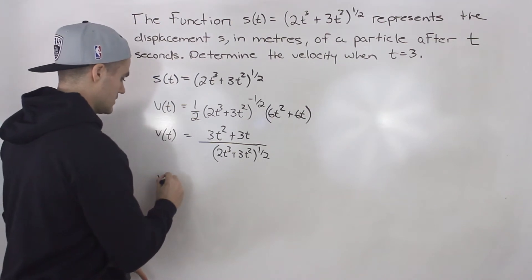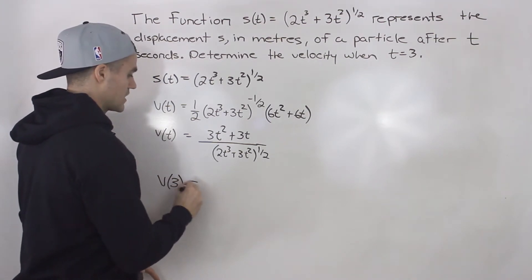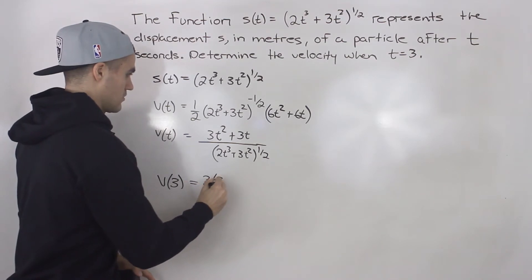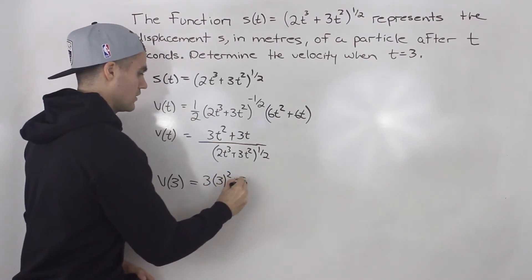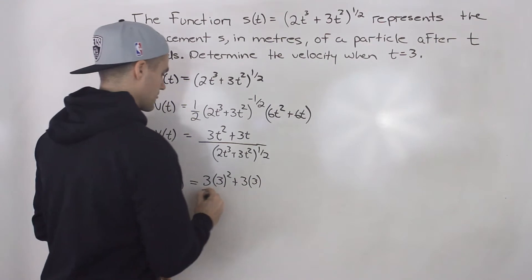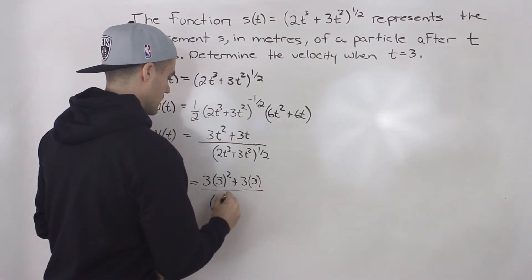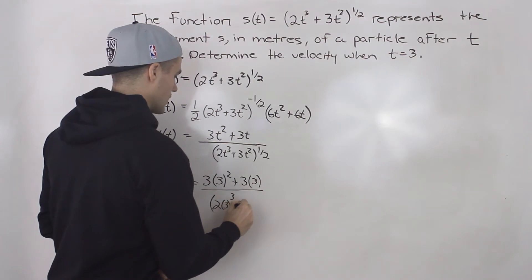And now all we have to do to find the velocity at 3 seconds is we have to find v(3). So we would just plug in 3 for all of the t values in this function for velocity.